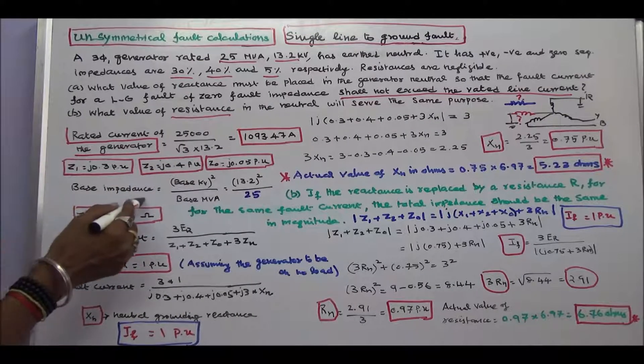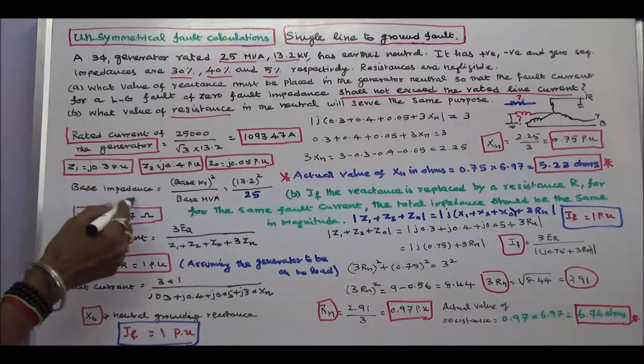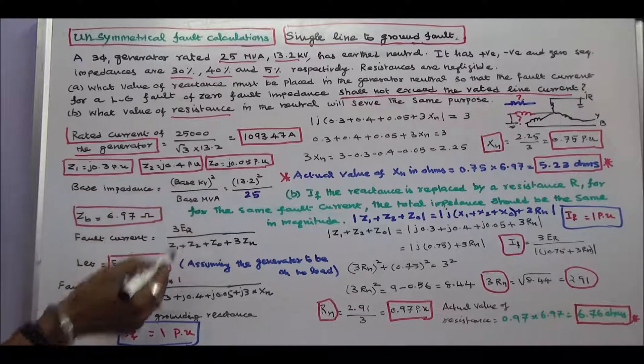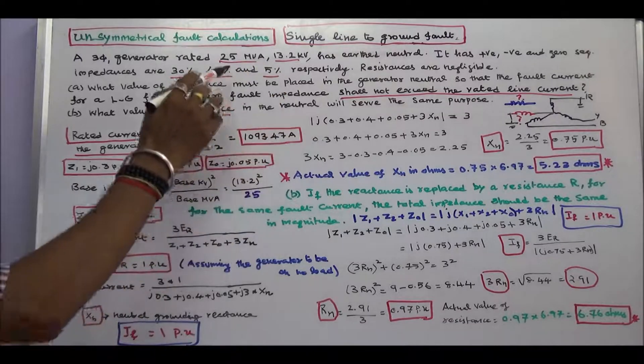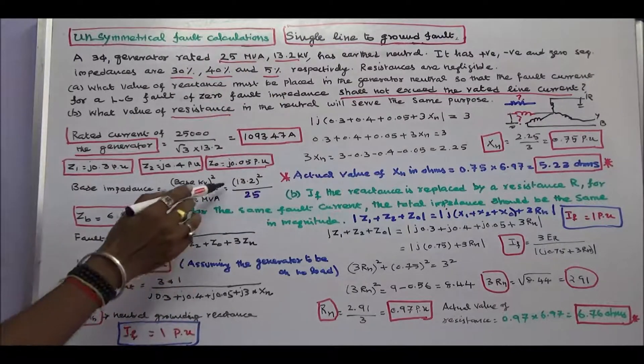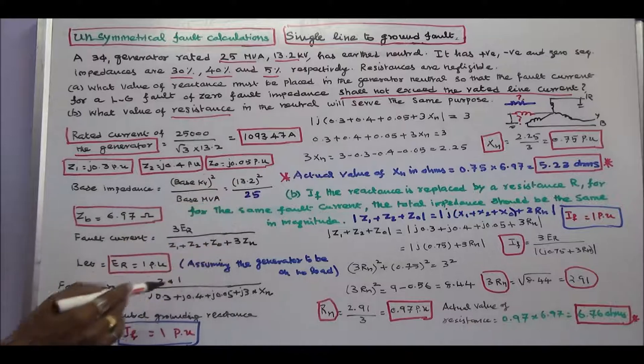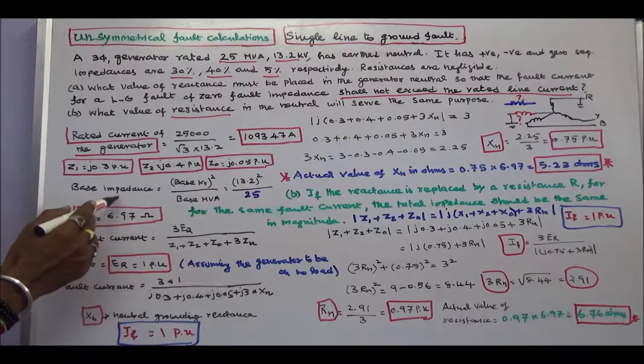Next, I have to calculate the base impedance. Base impedance is equal to base KV squared by base MVA. Here, base KV is 13.2, base MVA is 25. 13.2 squared divided by 25, that is equal to 6.97. That is the base impedance.